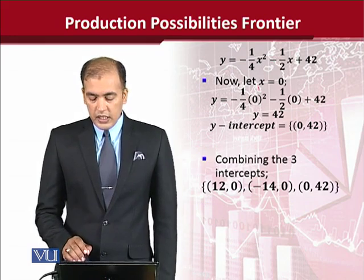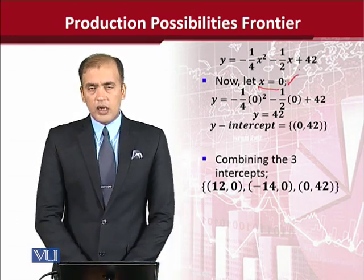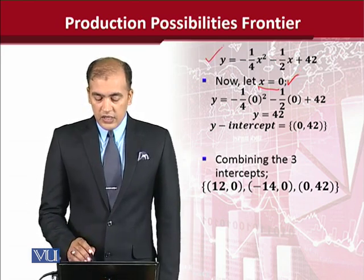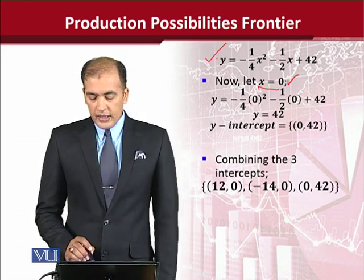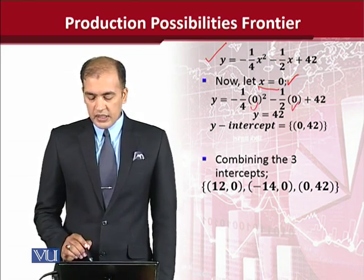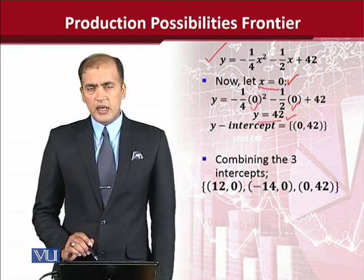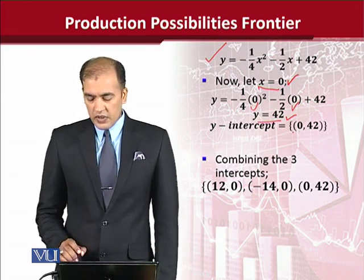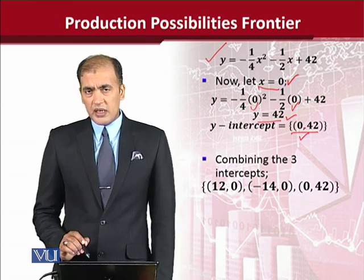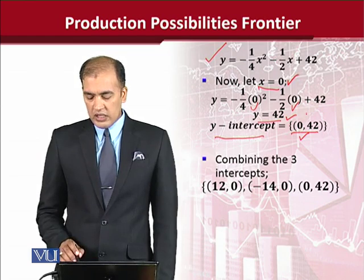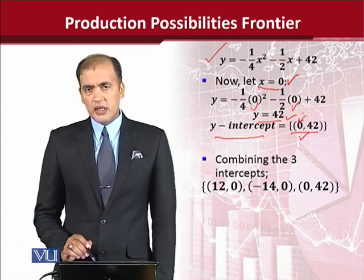Now, assuming x is equal to 0, it allows us to get the y-intercept. Using the same equation and substituting 0 for x, the simplification gives us y = 42. Written as an ordered pair, this is the y-intercept because the value of x is 0.